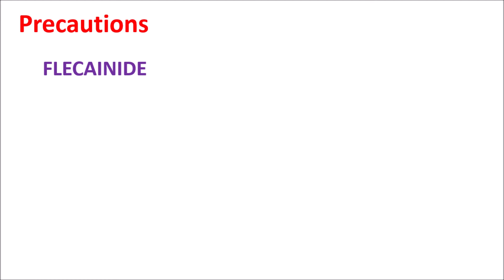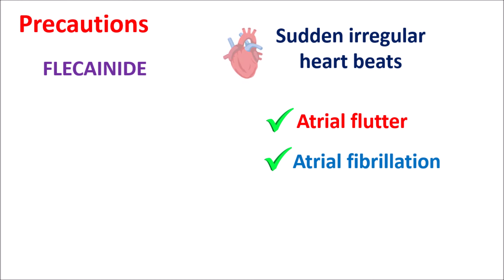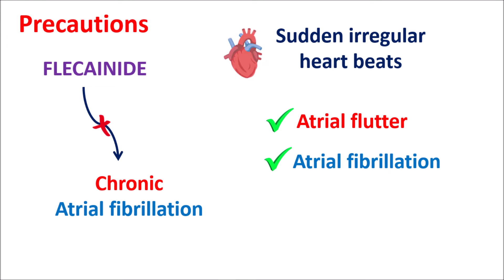One of the main uses of Flecainide is in conditions like sudden onset of irregular heartbeats associated with atrial flutter or atrial fibrillation. In paroxysmal supraventricular tachycardia, Flecainide can be used, but this drug is not recommended in chronic atrial fibrillation. In chronic conditions, Flecainide can further reduce cardiac activity by producing abnormal heart rhythm, so it is not used in chronic conditions but can be used in paroxysmal conditions to control irregular heartbeats.